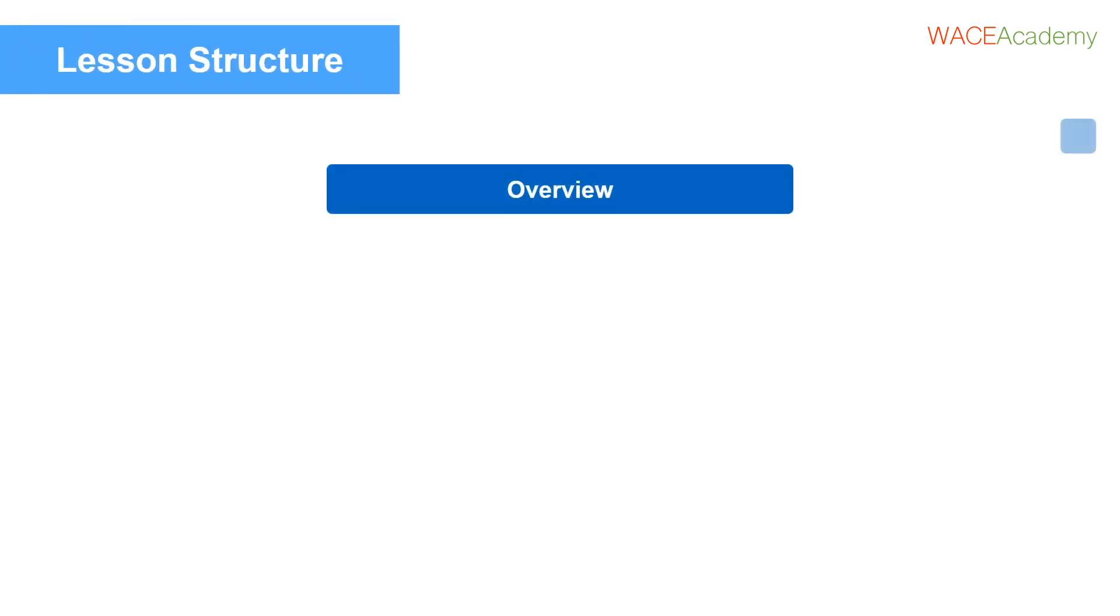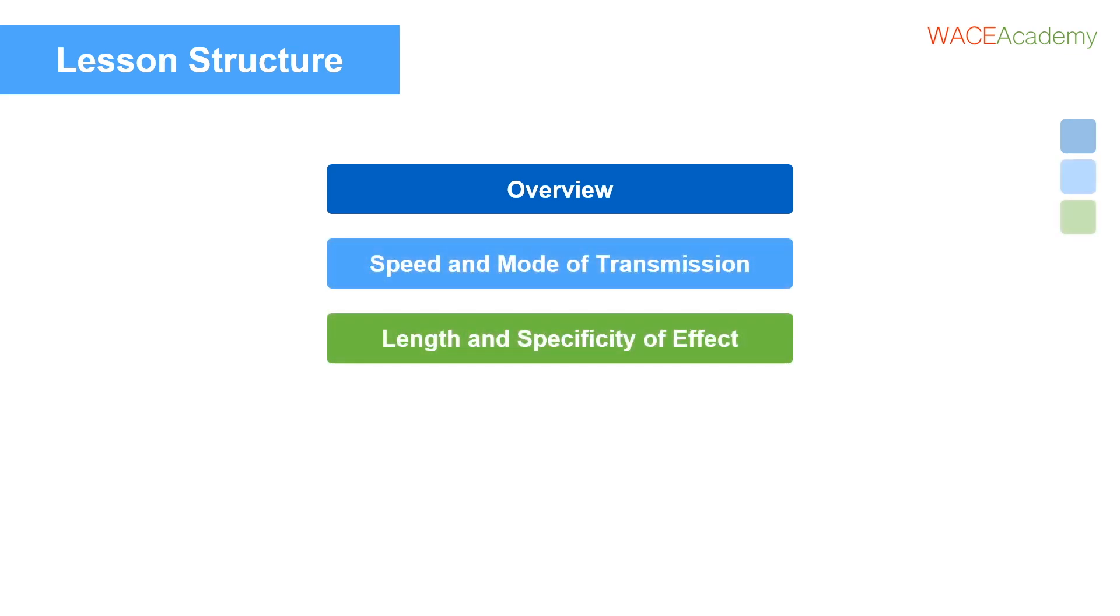Today we'll cover the key differences between the endocrine and nervous systems, which are both messengers in your body. First, we'll do a quick refresher on the two systems and what they're comprised of. We'll include how they send messages, how fast they work, how long their effects last, how specific they are, and the interaction between the two systems.